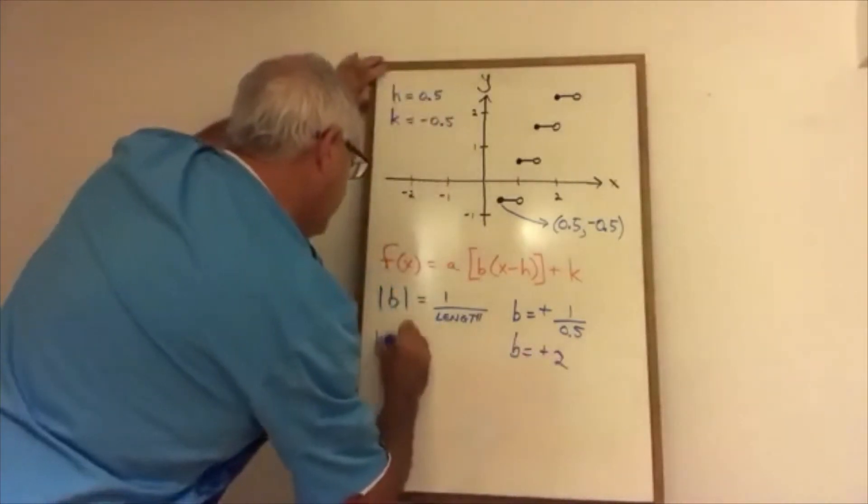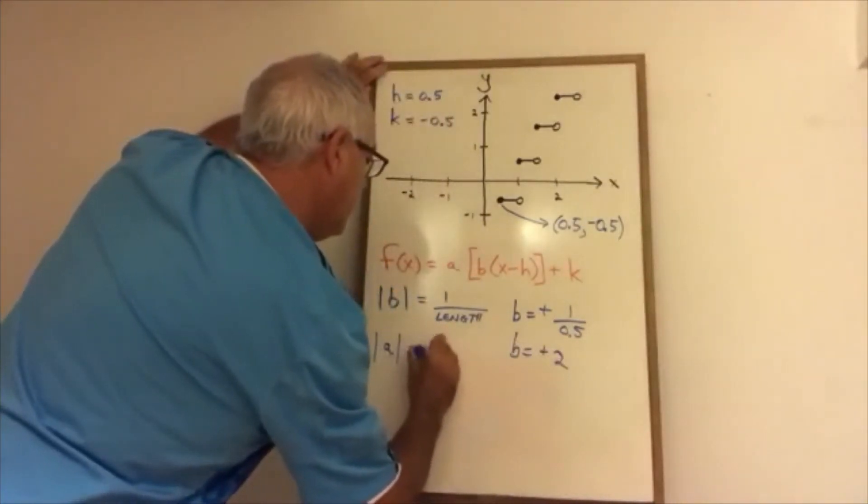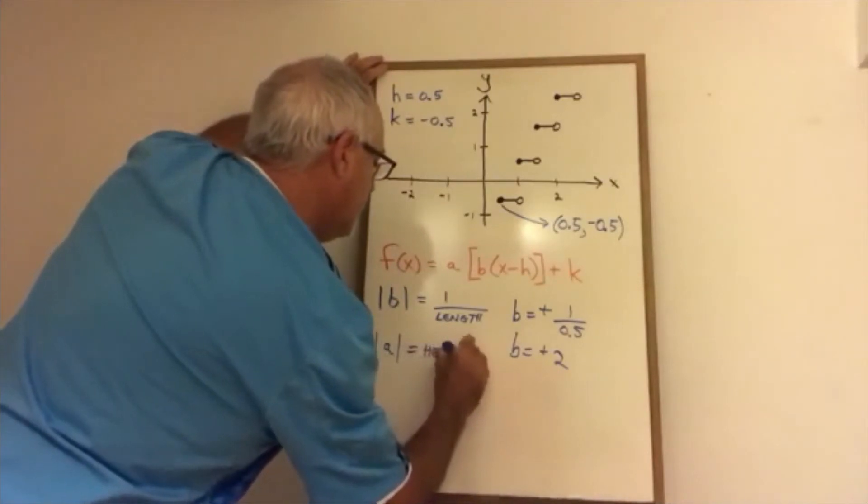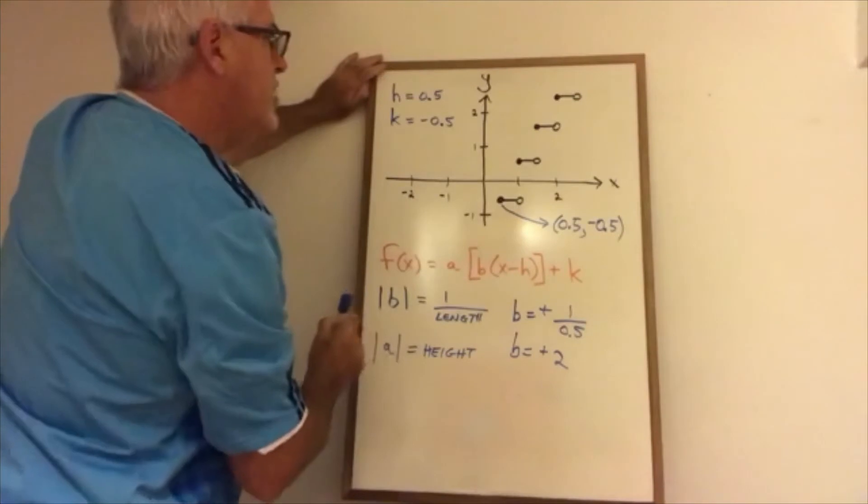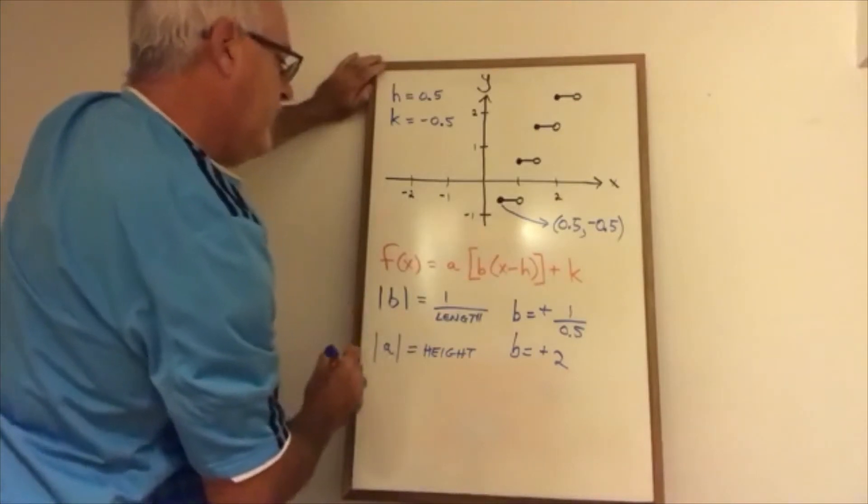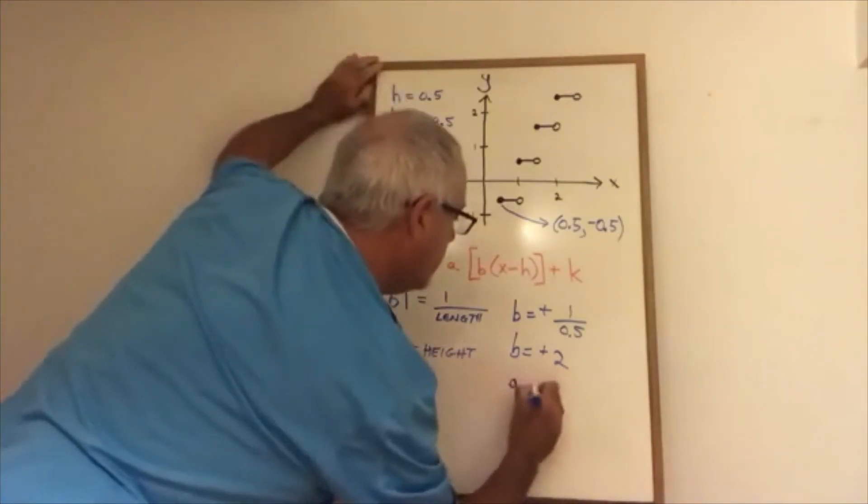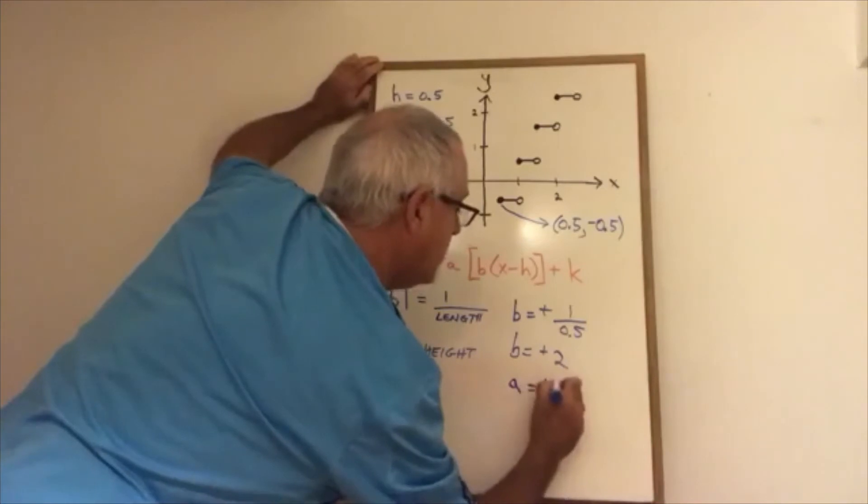The absolute value of a is equal to the height of the steps. The height of the steps is 1, 1 unit in height. So therefore a is equal to plus or minus 1.